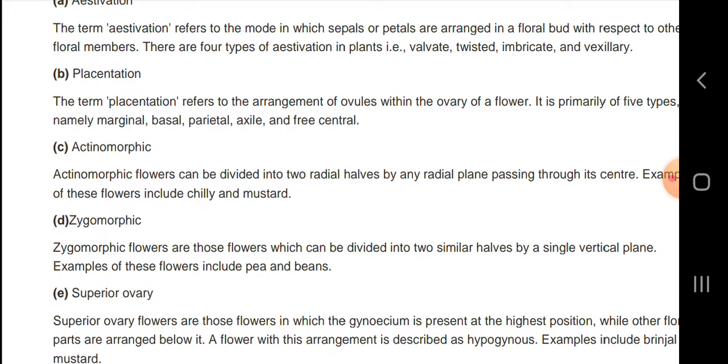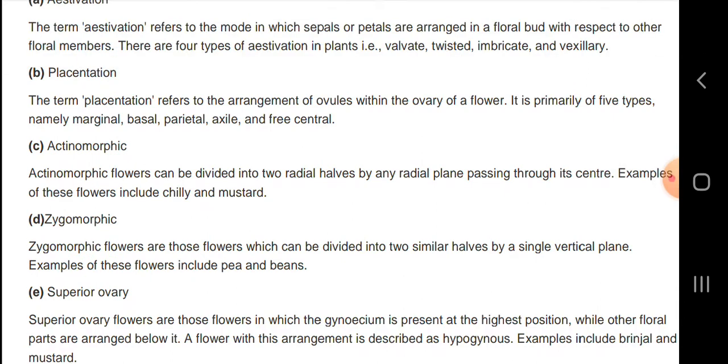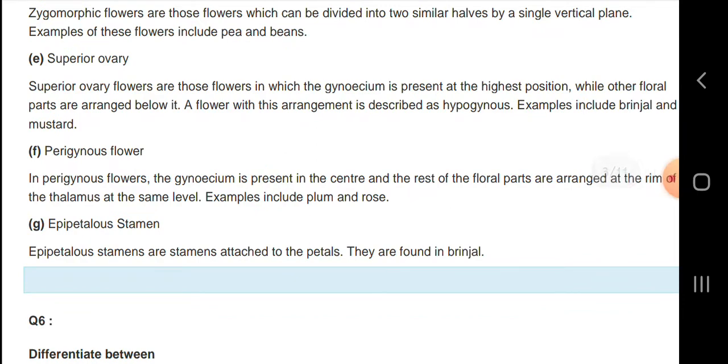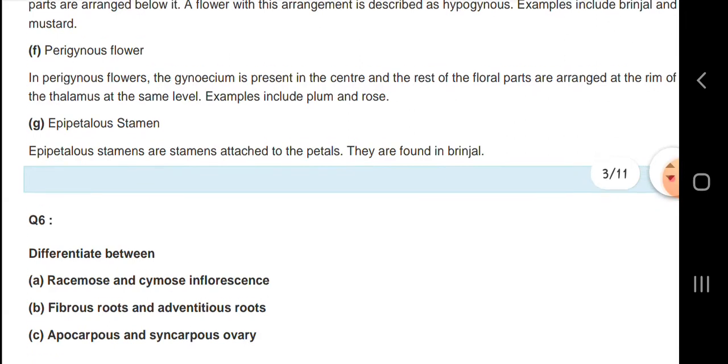Actinomorphic flowers can be divided into two equal halves by any radial plane passing through its center. Zygomorphic flowers can be divided into two similar halves by a single vertical plane. In superior ovary flowers, the gynoecium is present in the highest position while other floral parts are arranged below.